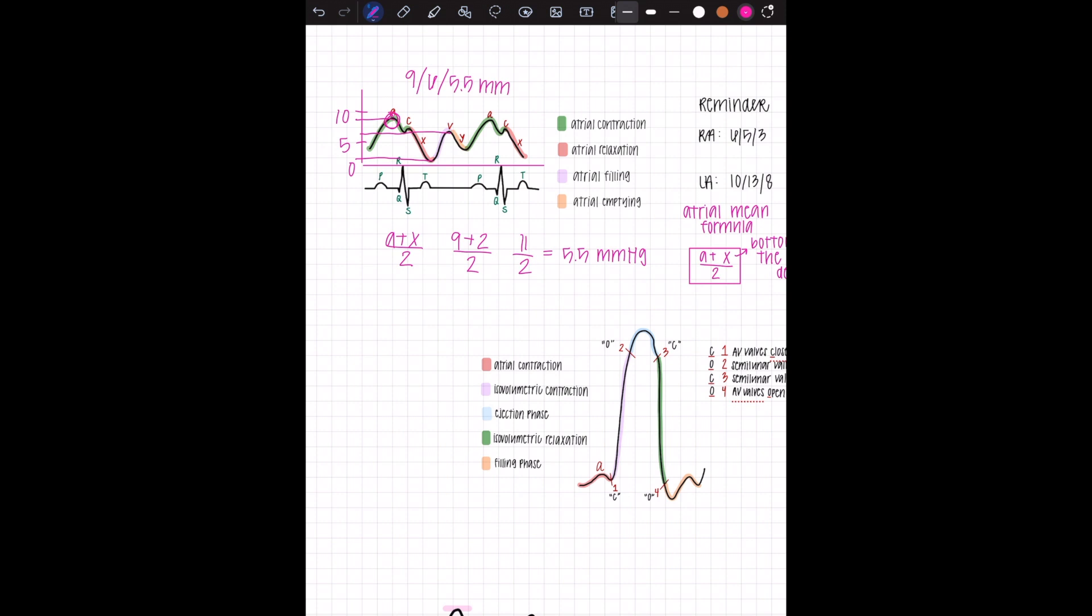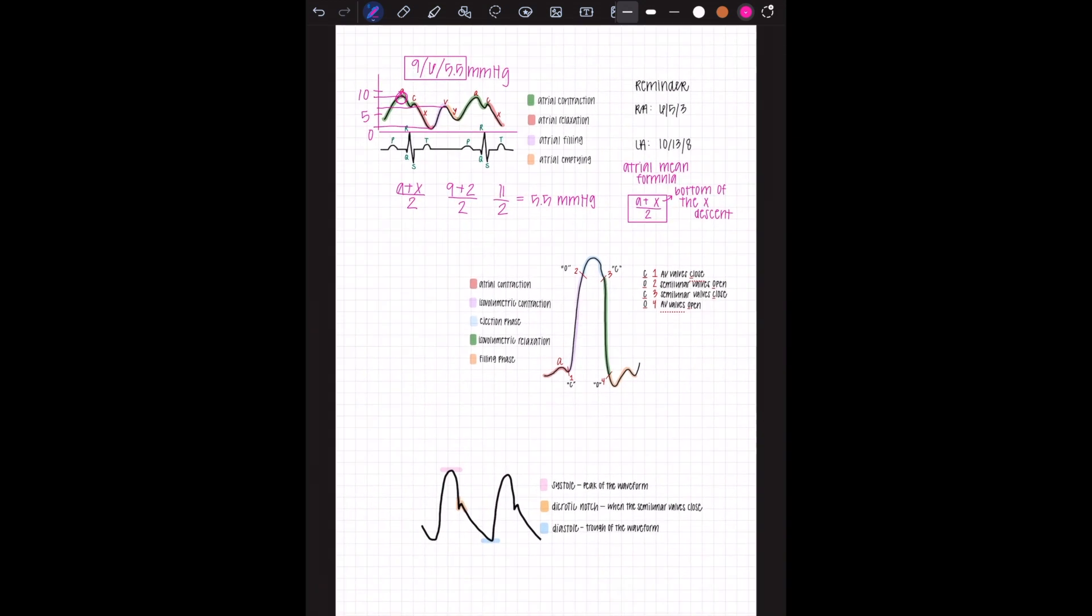Nine plus two is eleven over two is about 5.5 millimeters of mercury. That's going to be that last number. So your reported pressure, what you see at the top of the screen or your printout, is going to be 9-6-5.5, or it'll just round it to five or six.